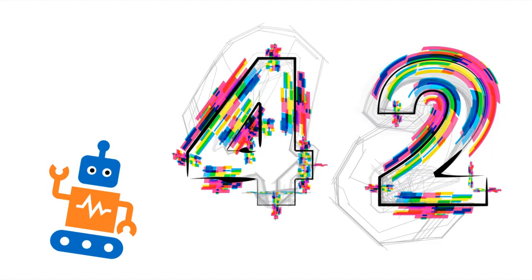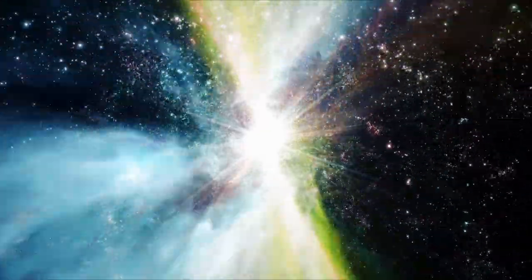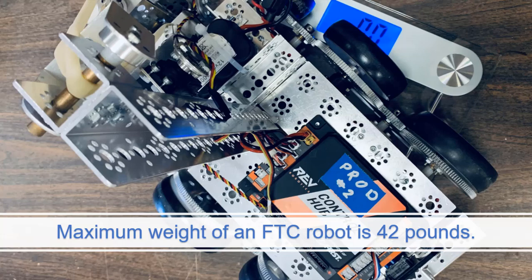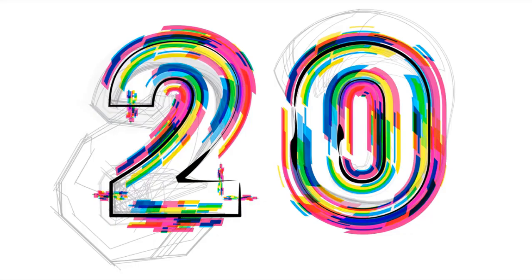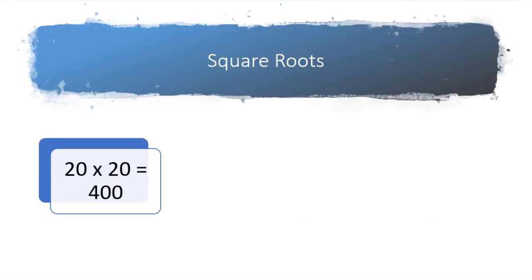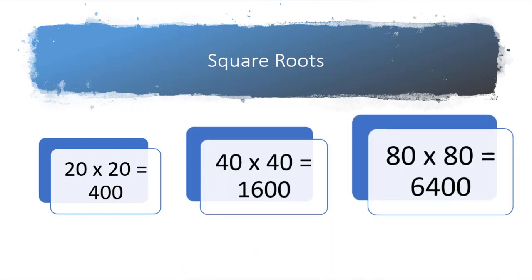Why 42? Because it's the answer to the ultimate question of life, the universe, and everything. Also, that's the maximum weight of an FTC robot. Okay, 20. That sounds like a non-snark guess. Let's see what happens. 20 times 20 equals 400. 40 times 40 equals 1600. And 80 times 80 equals 6400.